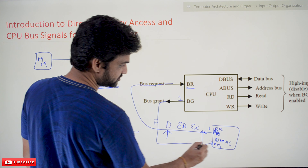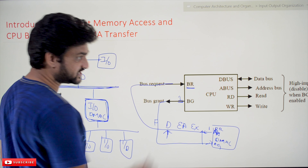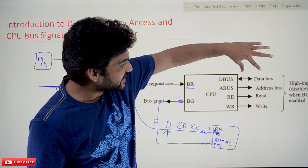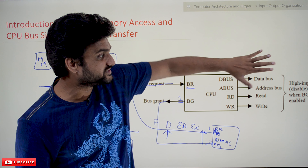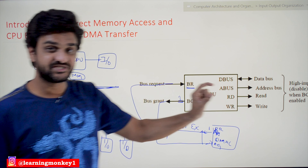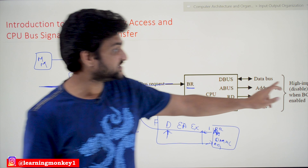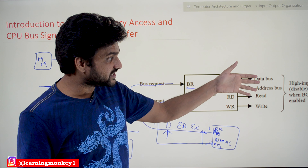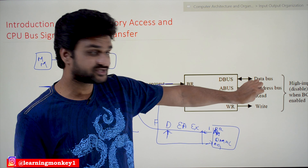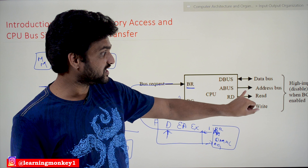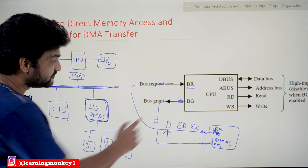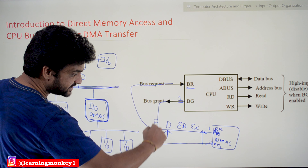Whenever the bus grant is activated, these bus lines — data bus, address bus, and read/write lines — will be disabled, placed in a high impedance state. High impedance means the lines through which data from the CPU would be transferred onto the bus are now disabled. So when bus grant is enabled, these lines get disabled.